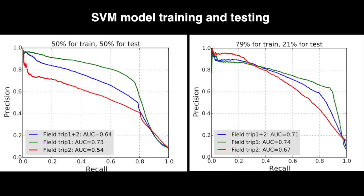SVM models are trained and tested with varying ratios. The left figure shows the results of utilizing 50% of the total dataset for model training and the rest for testing. The right figure uses 80% for training and 20% for testing. We achieve 0.64 and 0.71 AUC, respectively. We show qualitative peduncle detection results of red, green, and mixed color sweet peppers.